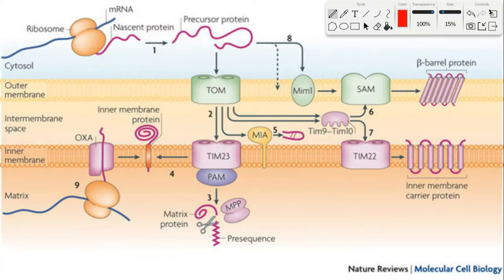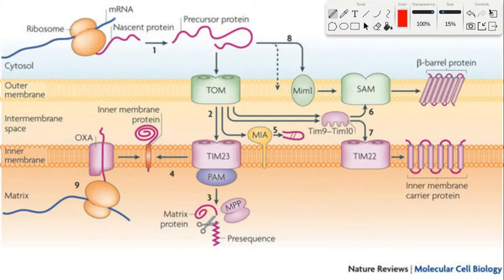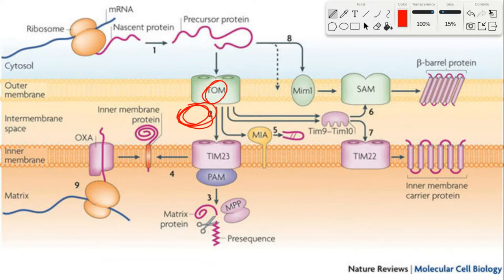The driving force for this translocation is the ATP-dependent HSP-70 protein, which is part of a larger complex called the PAM complex. PAM stands for pre-sequence associated motor complex, and it provides the pulling force to import proteins into the intermembrane space through the TOM-40 channels. The PAM complex provides this pulling force using ATP hydrolysis, which is accomplished through the HSP-70 subunit.